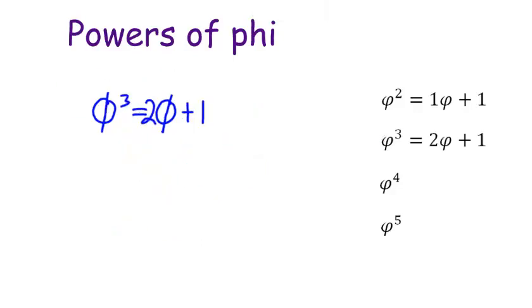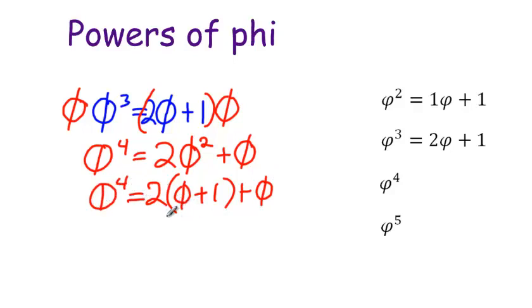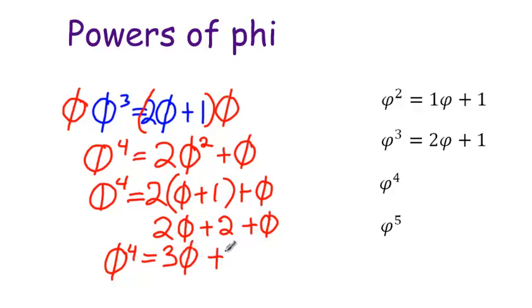So let's do the same thing again to find phi to the fourth. Phi cubed times phi is going to be phi to the fourth. But I need to multiply both sides of the equation by phi. So that's going to give me phi to the fourth is 2 phi squared plus phi. But phi squared is phi plus 1. Now distribute the 2. That's 2 phi plus 2 plus that other phi. So phi to the fourth is 3 phi plus 2.